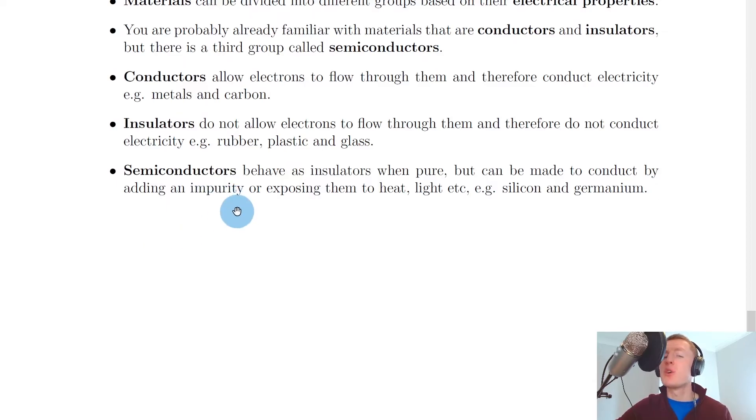So this concept of adding an impurity is known as doping and we'll actually see this in a different video. But you can also increase the temperature of a semiconductor material in order to get it to conduct better, or you can expose it to light and so on.